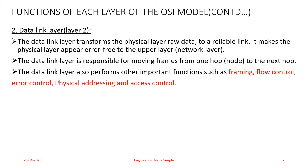Physical addressing: if frames are to be distributed to different systems on the network, the Data Link layer adds a header to the frame to define the sender and/or the receiver of the frame. If the frame is intended for a system outside the sender's network, the receiver address is the address of the device that connects the network to the next one.